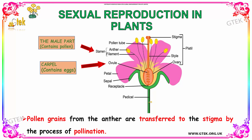And this portion is called the pedicel. Pollen grains from the anther are transferred to the stigma by the process of pollination. You can see the anther which is transferred to the stigma. This process is called pollination.